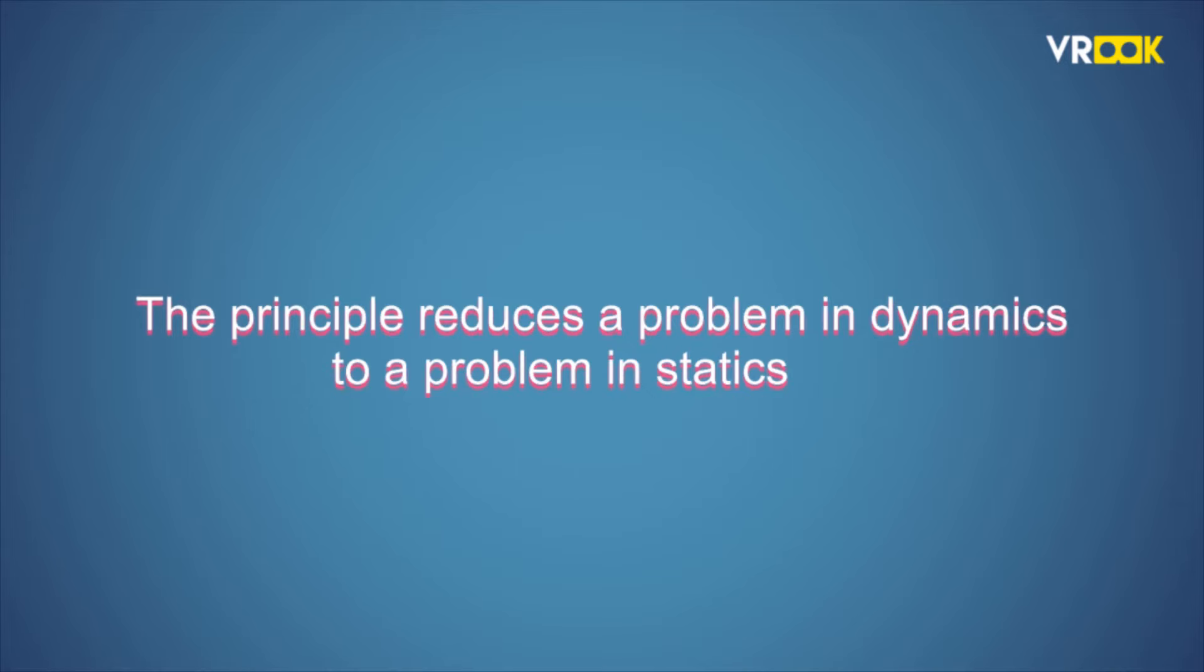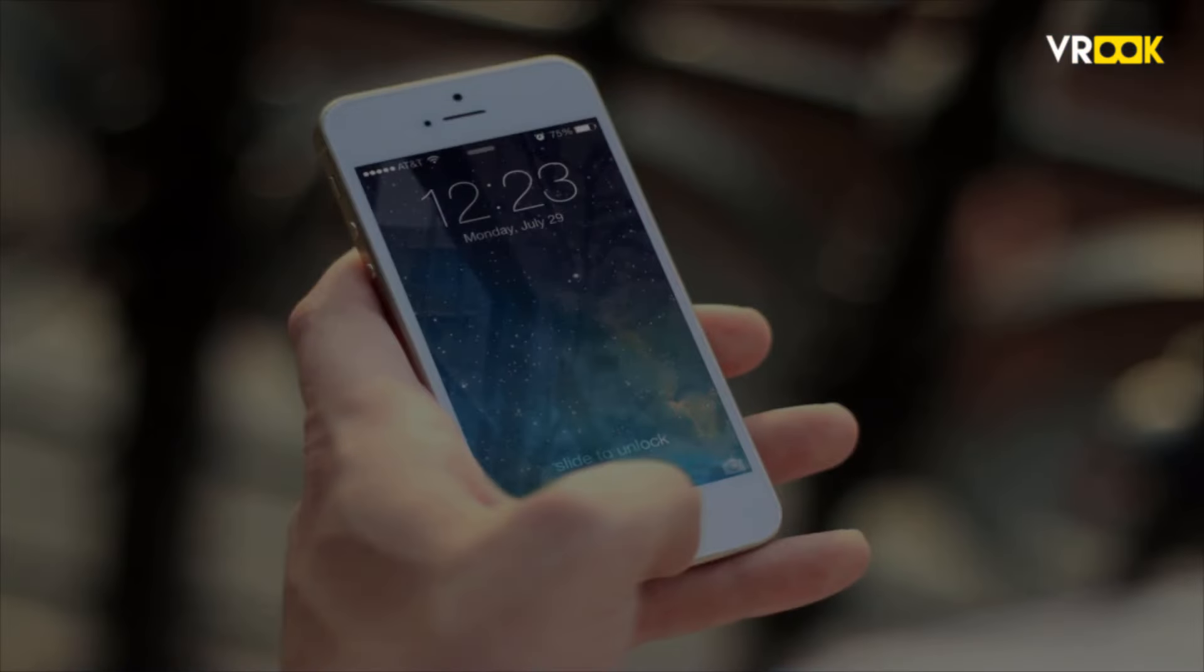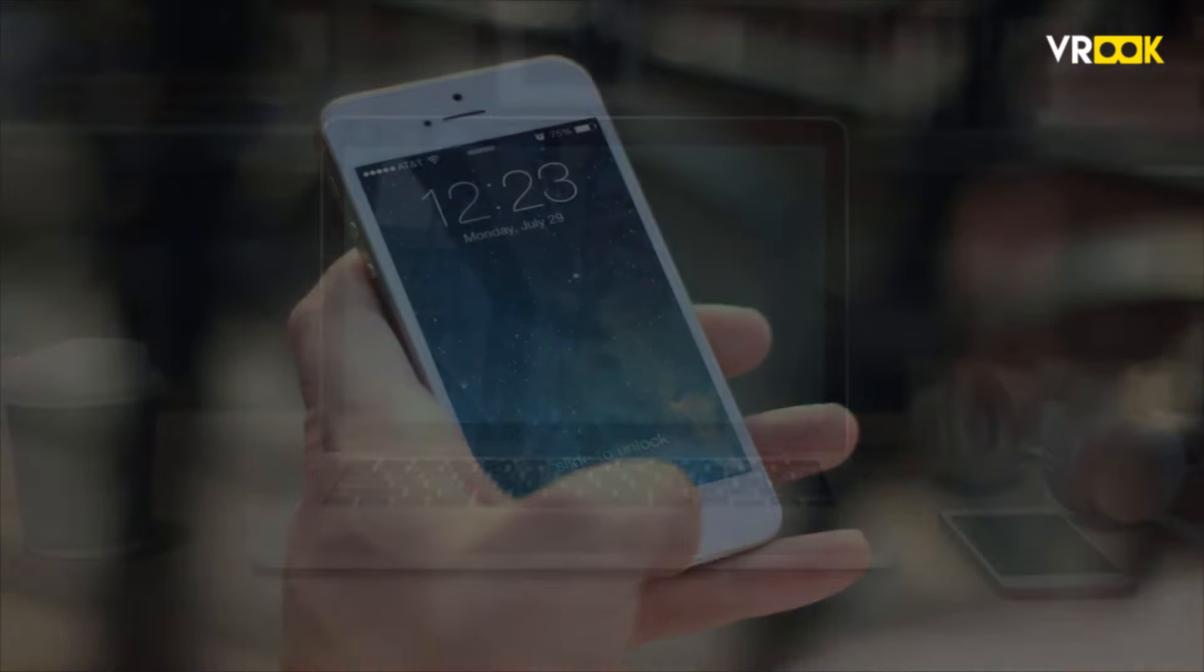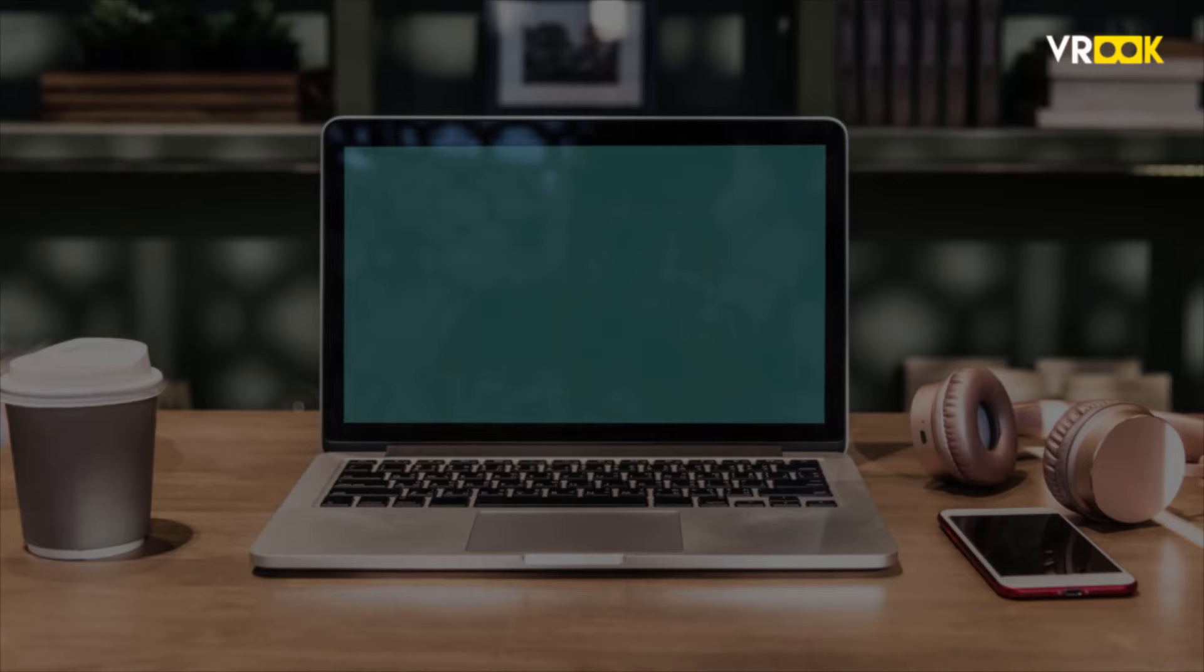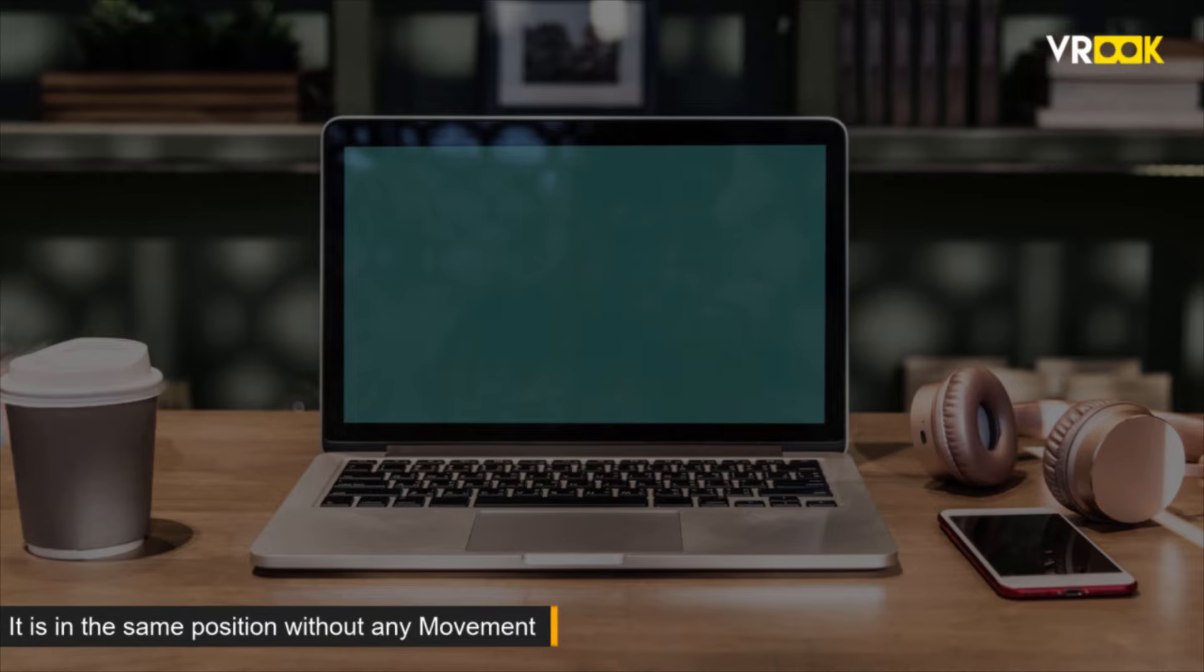To give you an example of dynamics and statics, the mobile you are holding to watch this video or a laptop kept on a table is in static equilibrium, which means it is static. There are a lot of forces acting on the laptop or mobile, but it is in the same position without any movement.